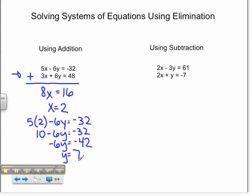Therefore, my solution is 2 comma 7. It's always a good idea to plug that into the other equation to check to be sure that's true. So, 3 times 2 is 6, plus 6 times 7 is 42. 6 plus 42 is 48, and that is what I was looking for.